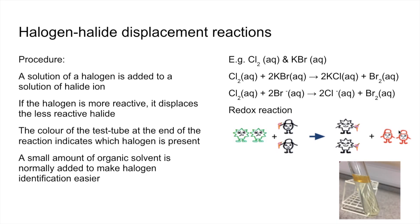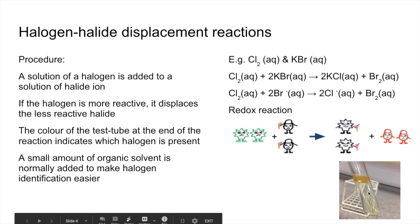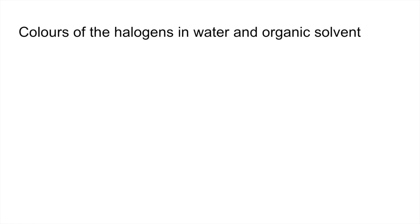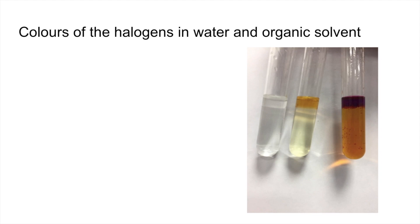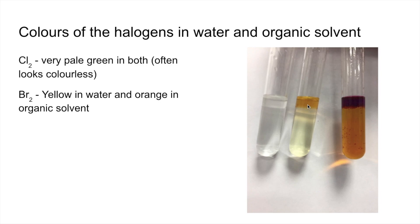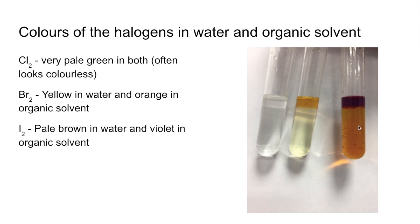In the test tube, the displaced bromine sits in the aqueous layer — it's a very pale yellow. Adding cyclohexane as an organic solvent means the bromine dissolves much better in that layer and you see its colour more intensely, giving an orange layer. Looking at all halogens in both layers: chlorine is very pale green in both — often looking colourless. Bromine is yellow in water and orange in organic solvent. Iodine is pale brown in water and violet in organic solvent.